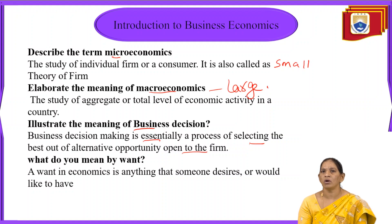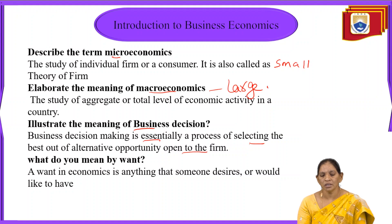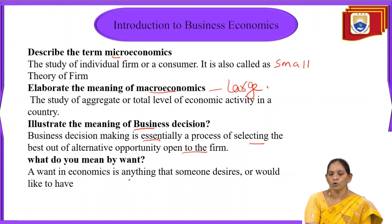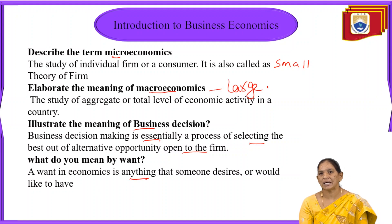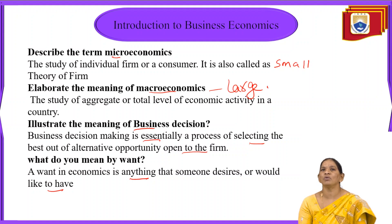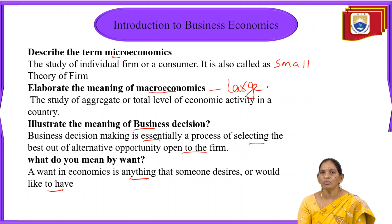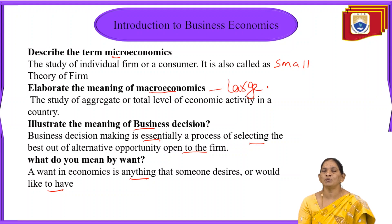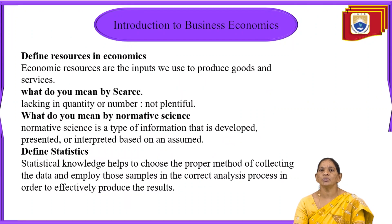Next, what do you mean by want? In economics, wants and scarcity are always related — wants are unlimited. A want in economics is anything that someone desires or would like to have. Economically, want means what we desire, what we opt for, or what we like to get. What we aspire to do in an organization, business, or economic activity is called a want in economics.